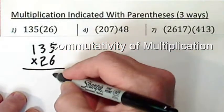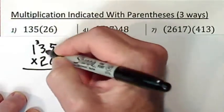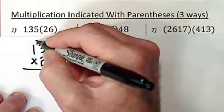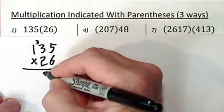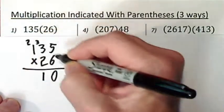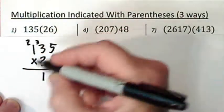Six times five is thirty. Carry the three. That's eighteen, nineteen, twenty, twenty-one. Carry the two. That's six, seven, eight.